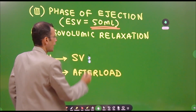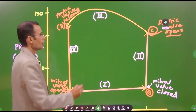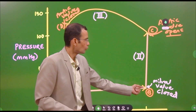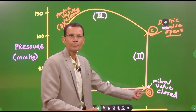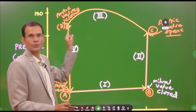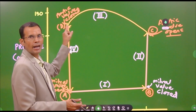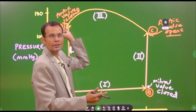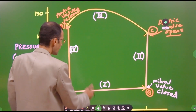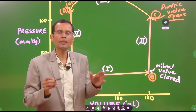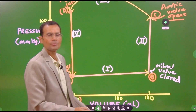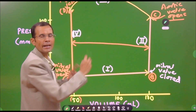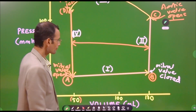Now two most important aspects. First: stroke volume. By the end of filling, 130 ml was in the left ventricle. After ejection, 50 ml was left behind. So 130 minus 50 equals 80 ml — the stroke volume is 80 ml. Therefore, the width of the loop indicates stroke volume, which is 80 ml.